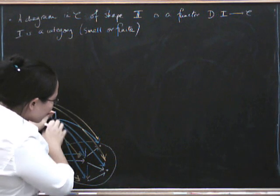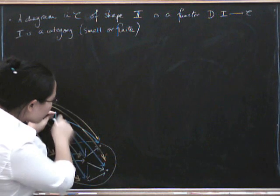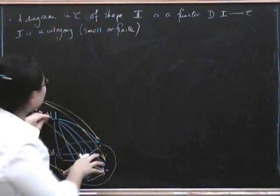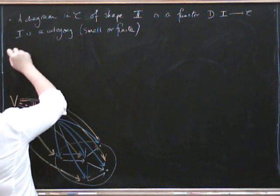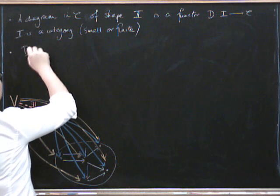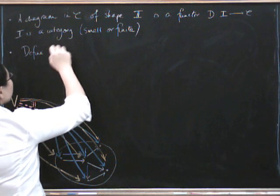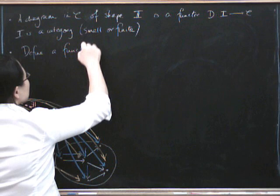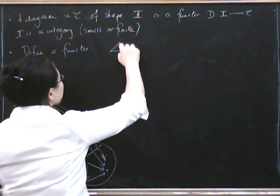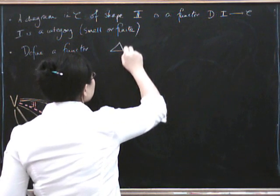Your other functor sends everything to this stuff, and then your natural transformation is going to give you this cone.